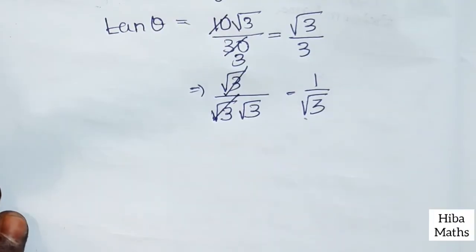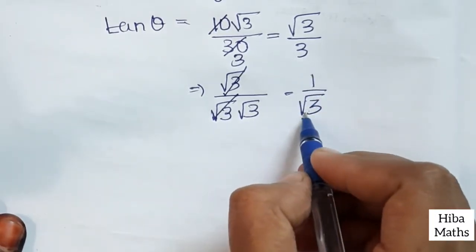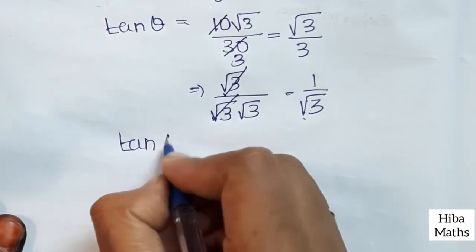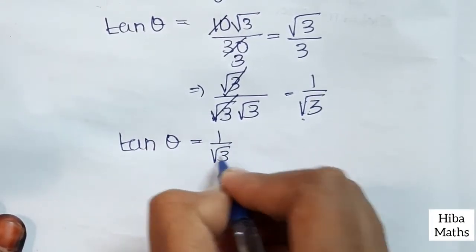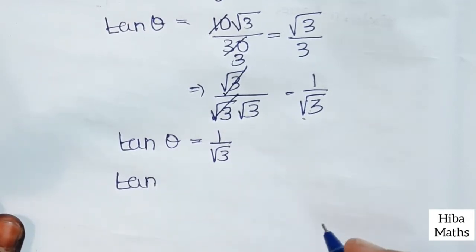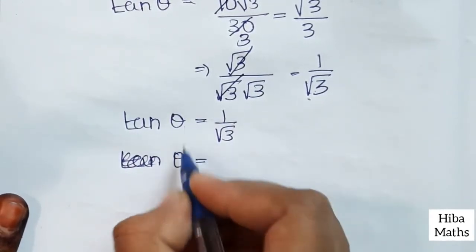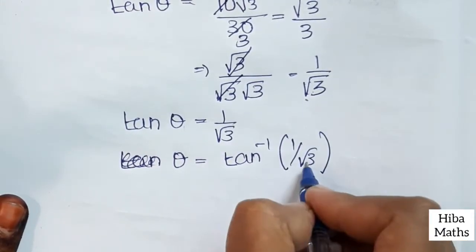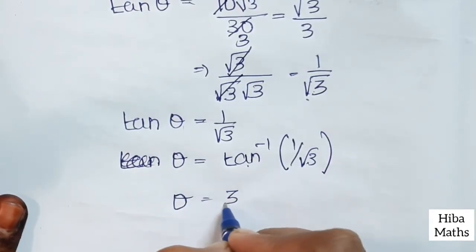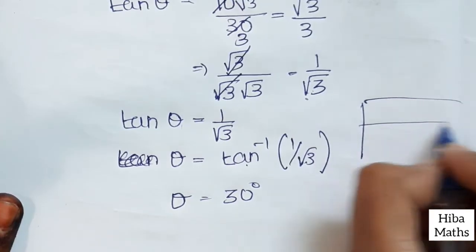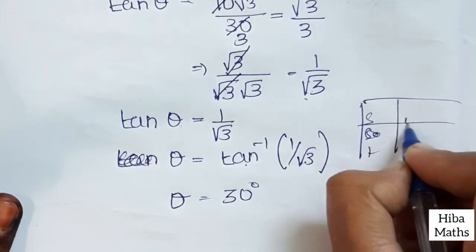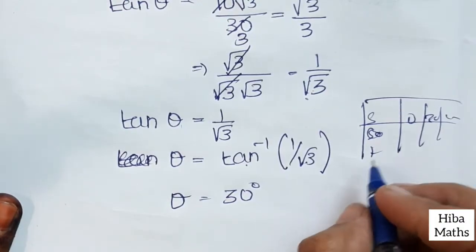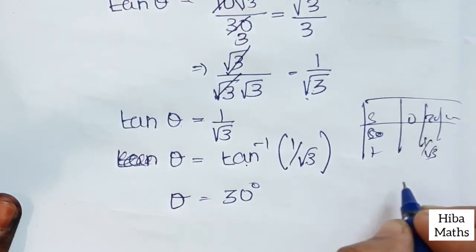From the tan table — tan 30, tan 40, tan 45 — tan 30 is equal to 1 by root 3. So tan theta equals 1 by root 3. Taking tan inverse of 1 by root 3, we get theta equals 30 degrees. If we study sin, cos, tan values for 0, 30, 45, tan 30 equals 1 by root 3.